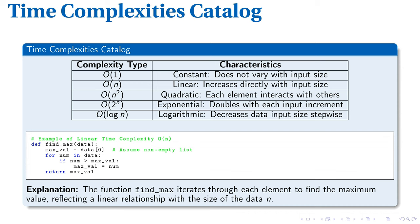We previously focused on the theoretical topic of algorithm time complexity and Big O notation. Let's now explore some examples. We encounter various time complexities in computer science, including constant O(1), linear O(N), quadratic O(N²), exponential O(2^N), and logarithmic O(log N).